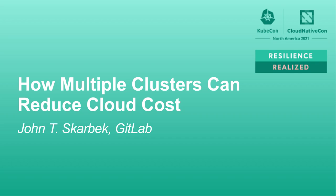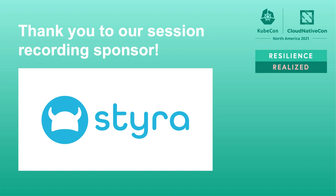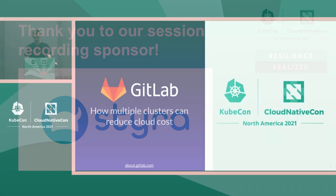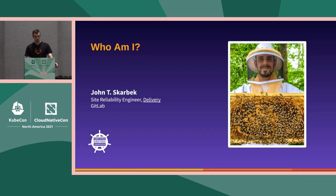My name is John Skarbek, and I'm going to have a conversation regarding how GitLab.com has added additional clusters to their infrastructure to reduce overall cloud costs. I'm a site reliability engineer for GitLab, specifically on the delivery team. I've been with GitLab for about three years, and as you can see from this image, I'm also a beekeeper sometimes.